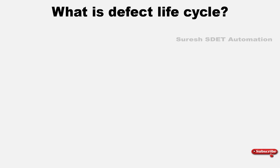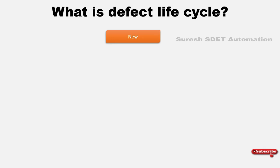Whenever we identify any defect as part of automation or manual testing, we create it as a new defect. The defect has severity and priority — severity is how much it has affected the functionality, and priority is how important it is that the defect needs to be fixed.